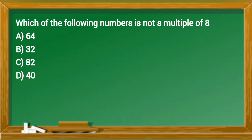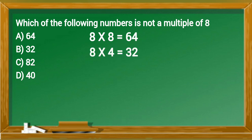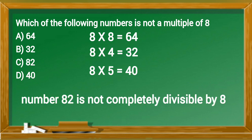Which of the following numbers is not a multiple of eight? Option A sixty-four, option B thirty-two, and option D forty are completely divisible by eight. But number eighty-two is not completely divisible by eight, so eighty-two is not a multiple of eight. This means option C is the correct answer.